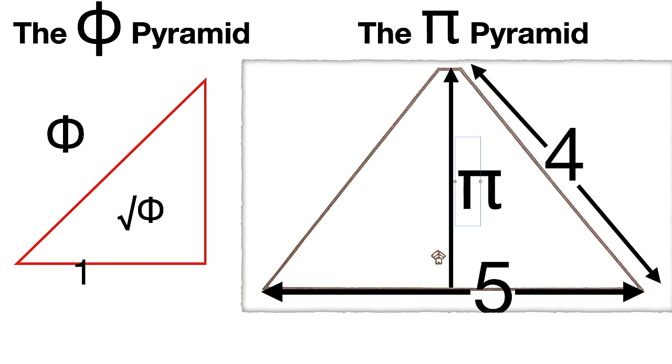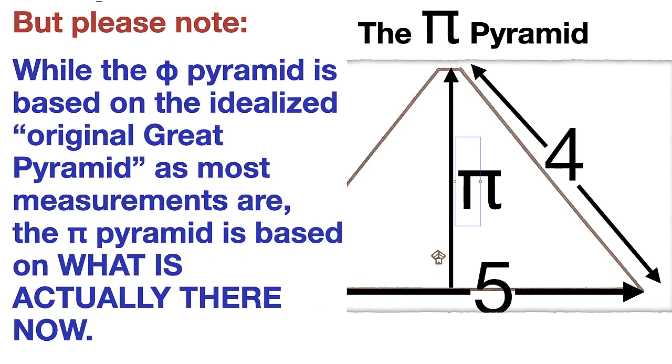We're not even sure that the pyramidion was ever on top. We're just guessing when we say what the original heights were, the 280 royal cubits and all that kind of thing. Please note, while the Phi pyramid is based on the idealized original Great Pyramid that we assume had the pyramidion but we can't prove it, most measurements you see about the Great Pyramid always go to this idealized pyramid that's not there now. But the Pi pyramid is based on what actually is there now. This Pi, 4, 5 pyramid that I found here is based on what's actually there now.